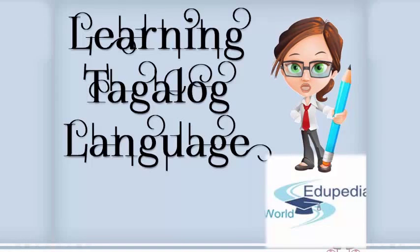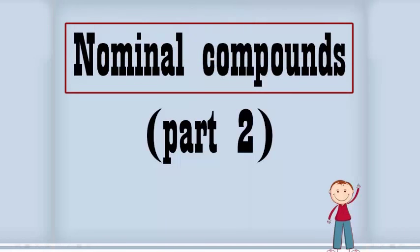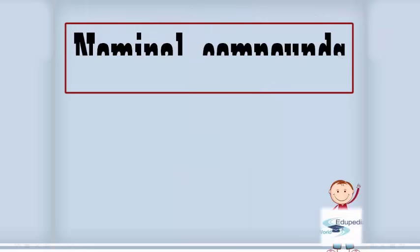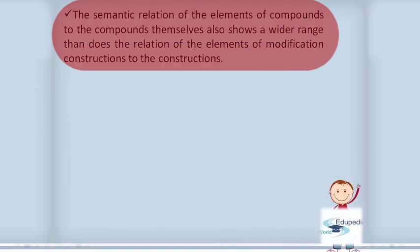This is Part Two of nominal compounds. The semantic relation of the elements of compounds to the compounds themselves shows a wider range than the relation of the elements of modification constructions to those constructions.